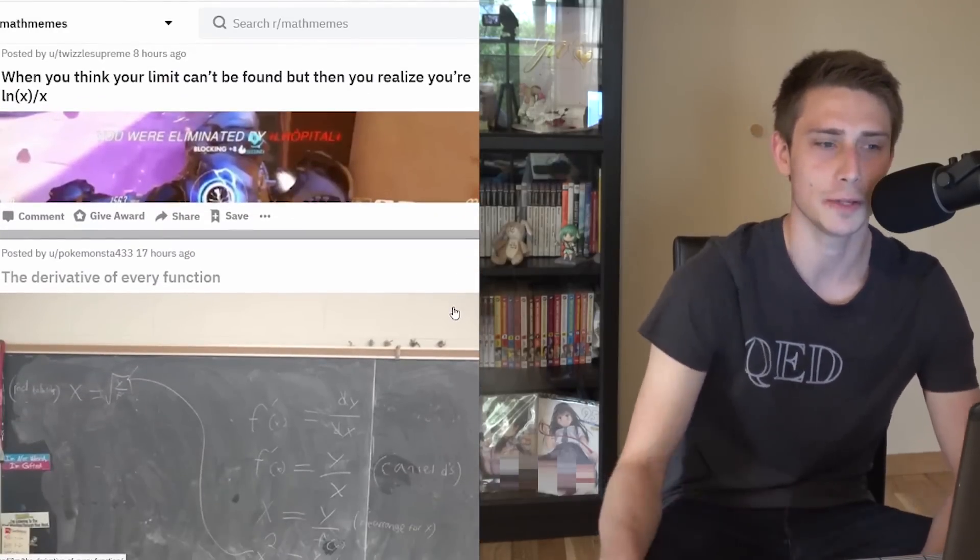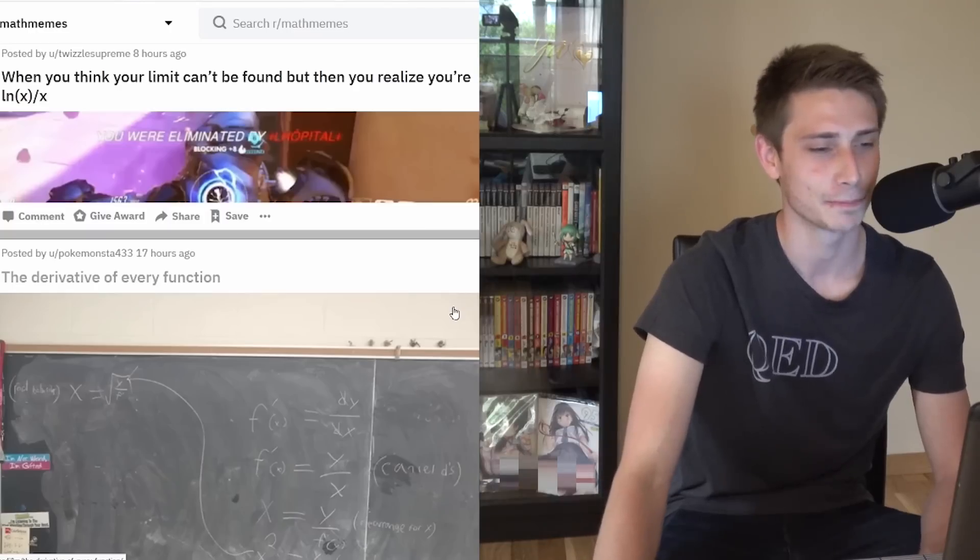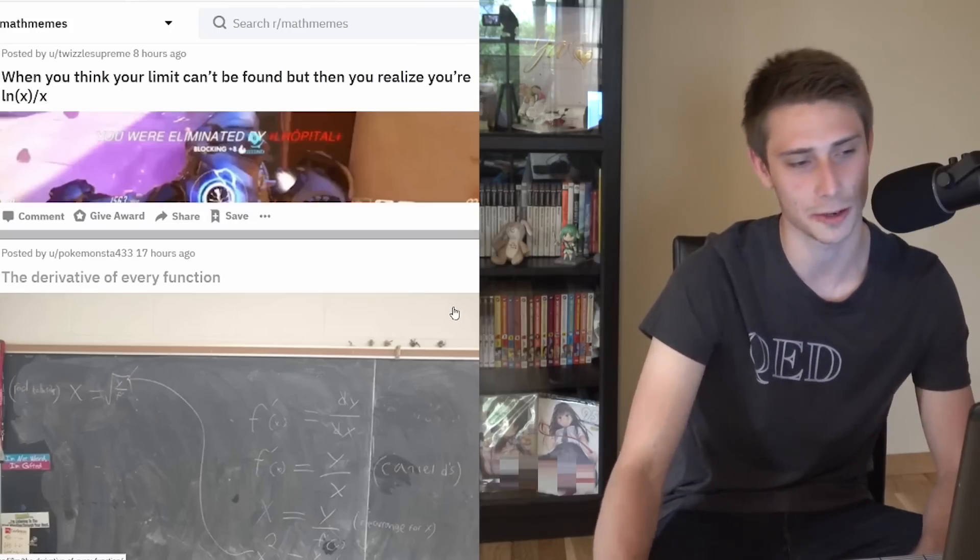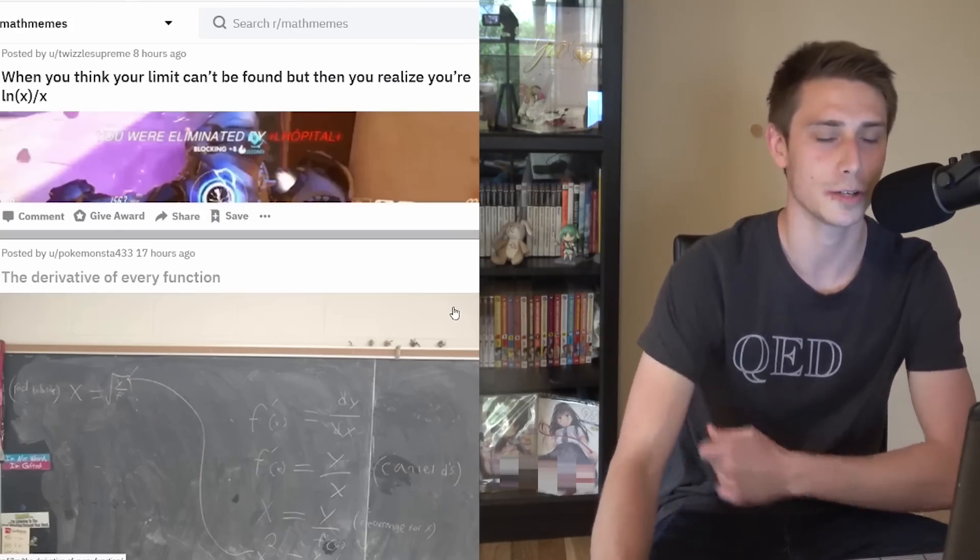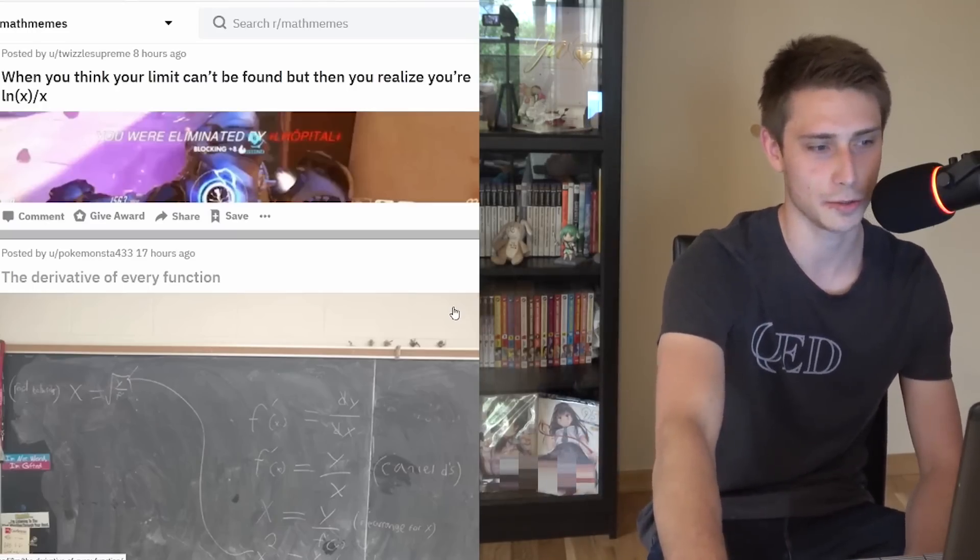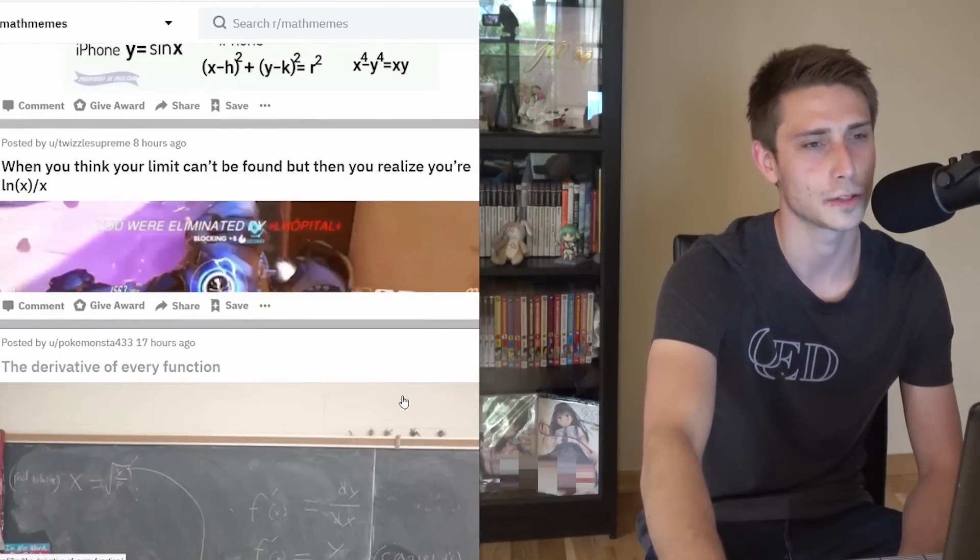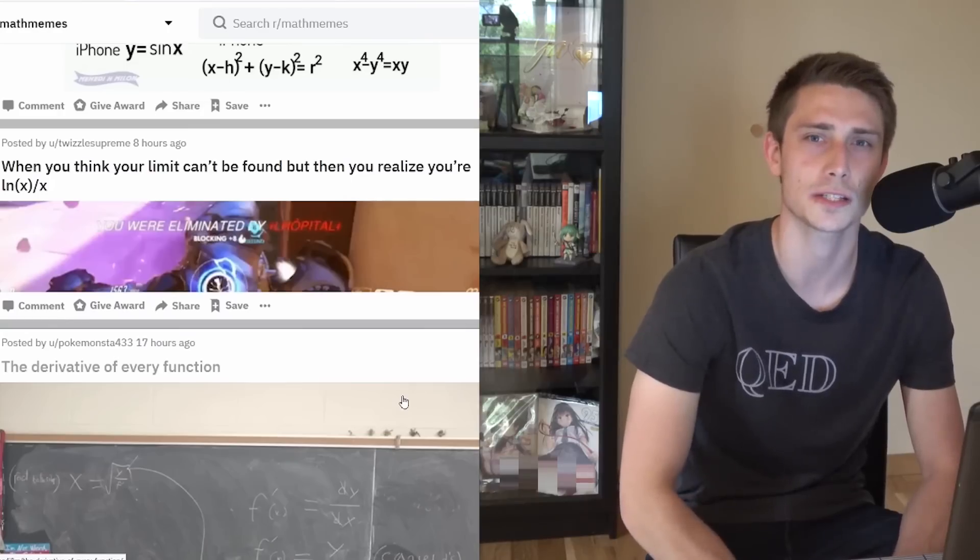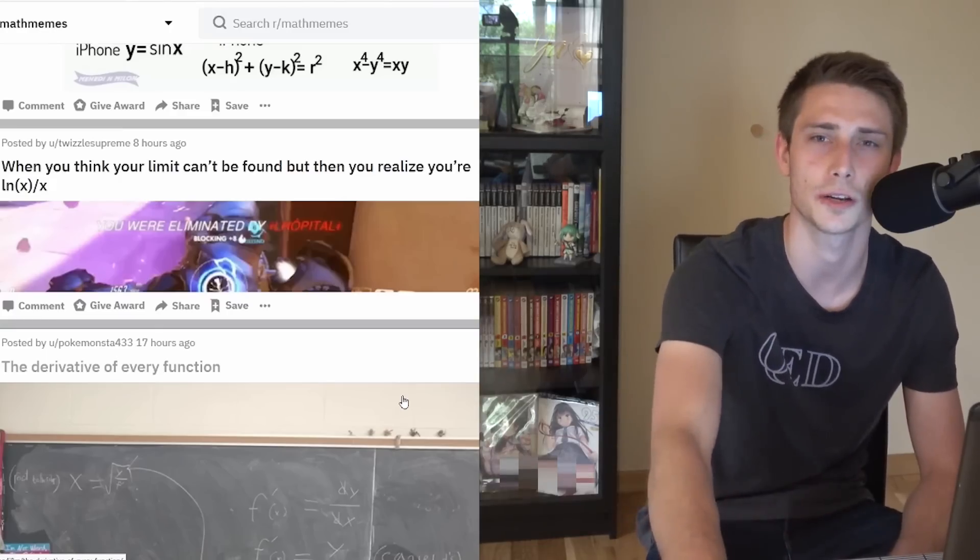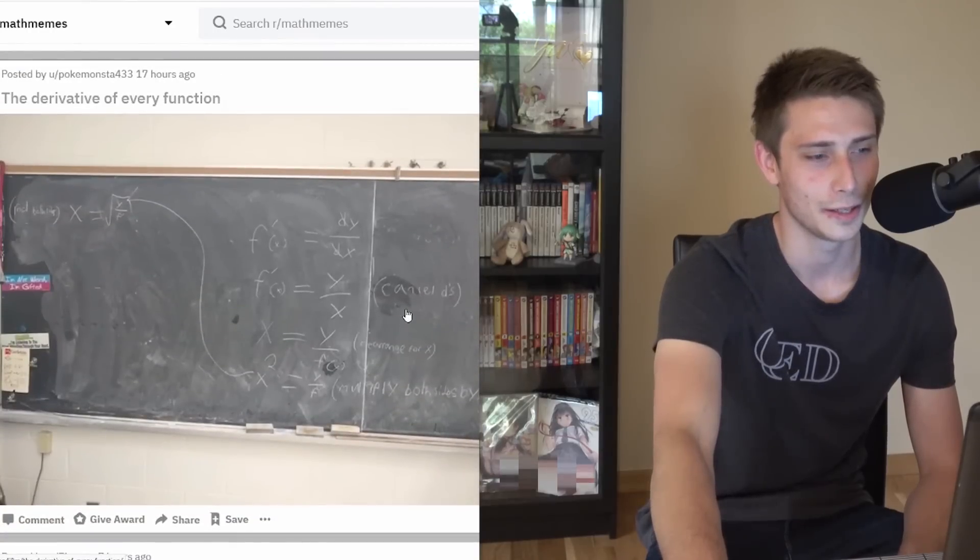When you think your limit can't be found but then you realize you are ln x over x, you were eliminated by L'Hôpital. This helps a lot actually. You can just differentiate top and bottom and you are going to get something pretty nice. Try out the limit of e to the square root of x over x. If you differentiate that, that could probably be pretty tricky. Try that out for yourself with L'Hôpital.